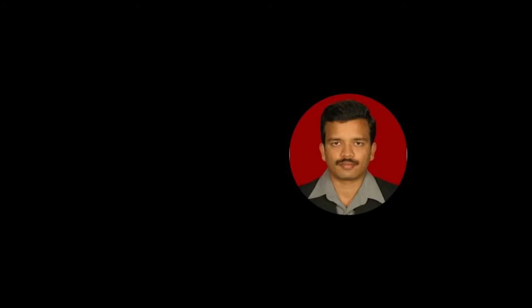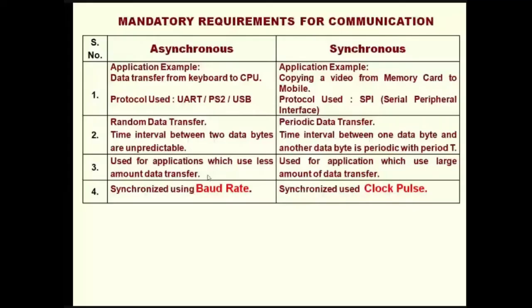In asynchronous serial communication, synchronization before starting communication involves checking capabilities and fixing the data rate — this is called baud rate. Baud rate is necessary because it is communication between two boards, such as a mobile phone board and a PC board. Each board has a different processor running at a different speed, so the speed variation needs to be adjusted. We use baud rate-based communication to synchronize through the agreed data rate.